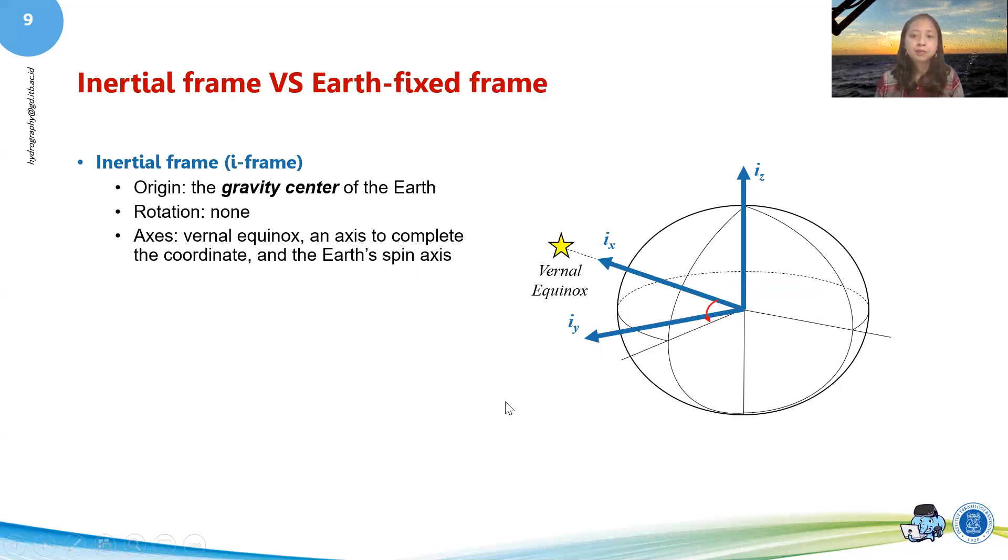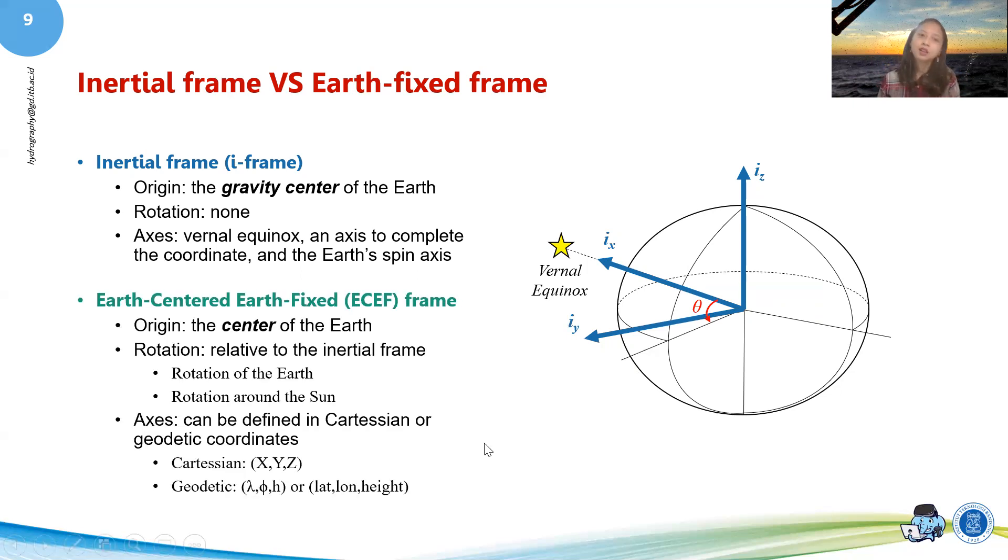How about our Earth-fixed frame? So if you want to transform from inertial frame to Earth-fixed frame, we've got something that is called a rotation that is called theta. So that's an angle of rotation. So if we transform this inertial frame into ECEF frame by theta, we will have the Earth's center Earth-fixed frame or ECEF frame. The center of the Earth, that's the origin. So that's basically very similar. But this kind of frame has two rotations. Firstly, the rotation of the Earth. So the frame moving with the rotation of the Earth and the rotation of the Earth around the sun, or some people call it revolution.